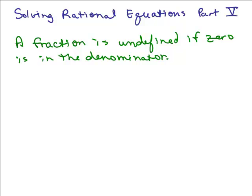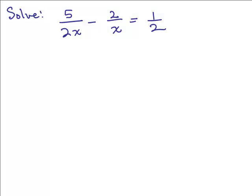This is part 5 of rational equations. Just keep in mind, a fraction is undefined if 0 is in the denominator. So here's an example: 5 over 2x minus 2 over x equals 1 half. This is an equation we're trying to solve for x and there are fractions.